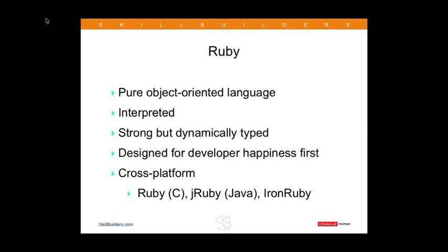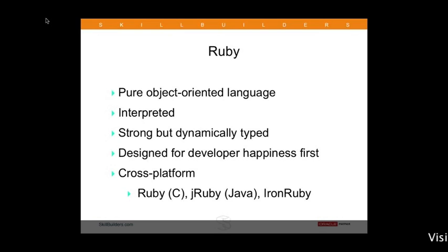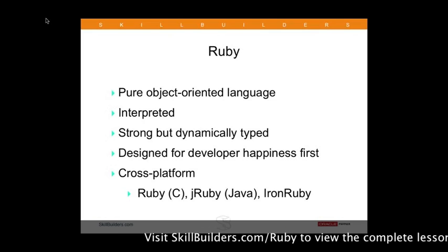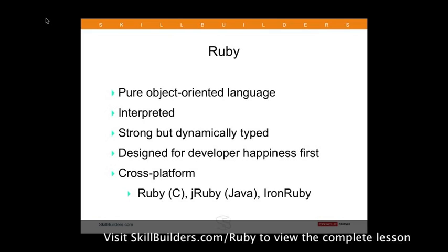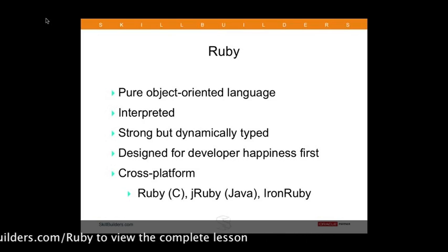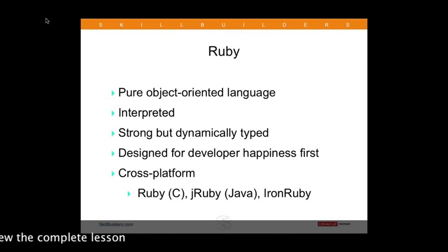Ruby is a pure object-oriented programming language. It's not a compiled language — it's an interpreted language, so you're going to see a little bit slower performance, but in terms of the kind of applications that Ruby is suited for, the speed isn't any kind of issue. It's a strongly typed language, but it's also dynamically typed, and you'll see some examples of that in just a few minutes.